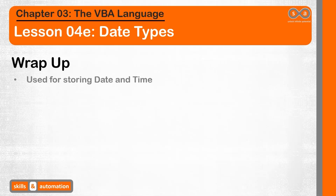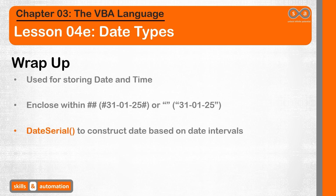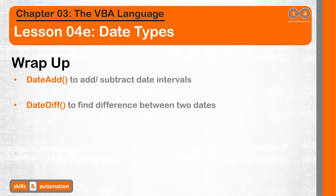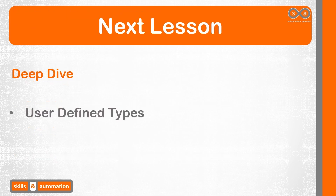The date data type is used for storing date and time. We can provide a date in any valid format by enclosing the value within double quotes or hash symbols. Use the DateSerial function to construct a date based on individual date intervals — year, month and day. Use the DatePart function to extract individual date intervals from a valid date. To add date intervals, use the DateAdd function. To compare the difference between two dates, use the DateDiff function. We can convert a date to any format using the Format function. And to determine whether a date string is valid or not, use the IsDate function. In the next video, we will learn about user-defined types.